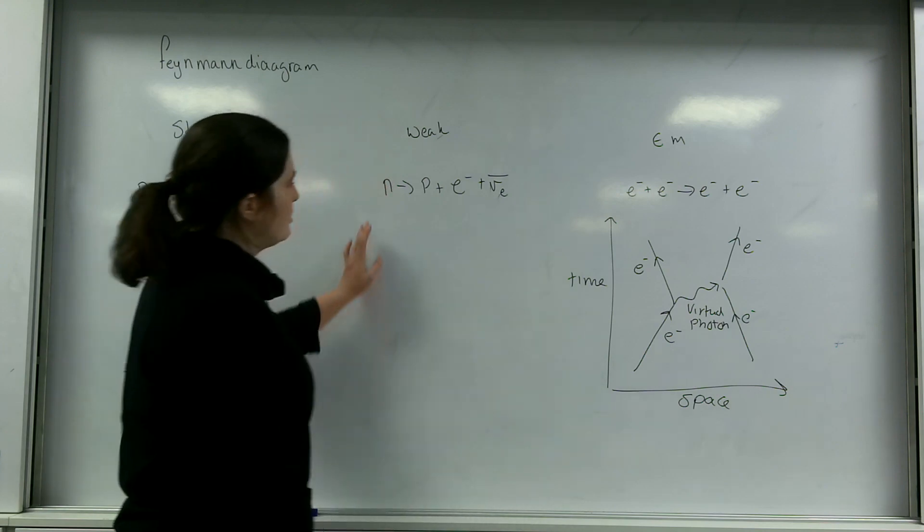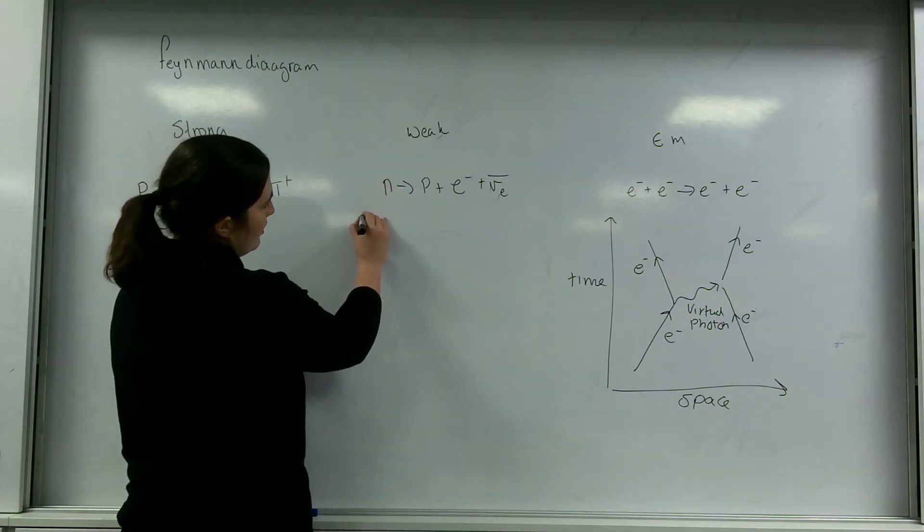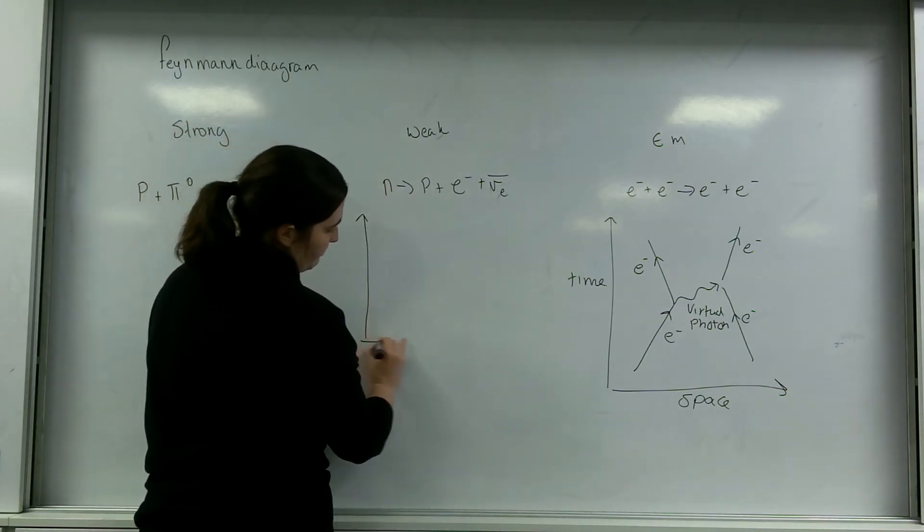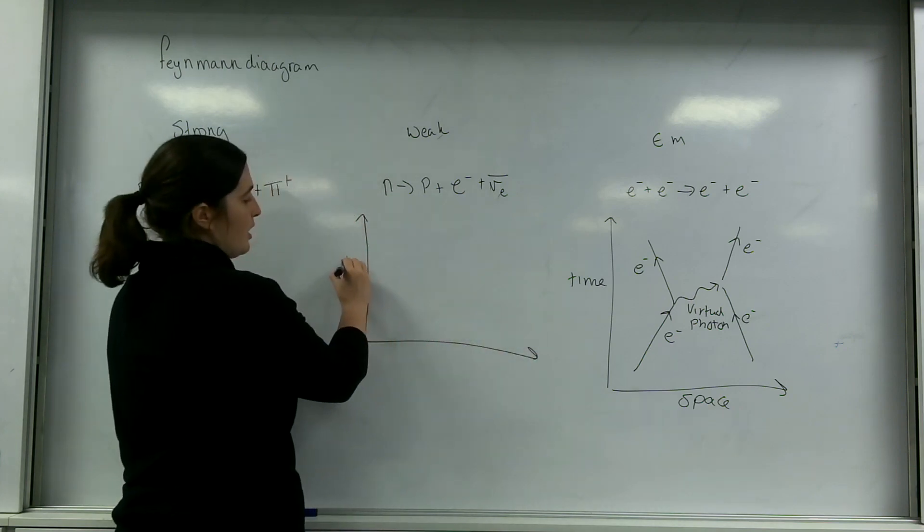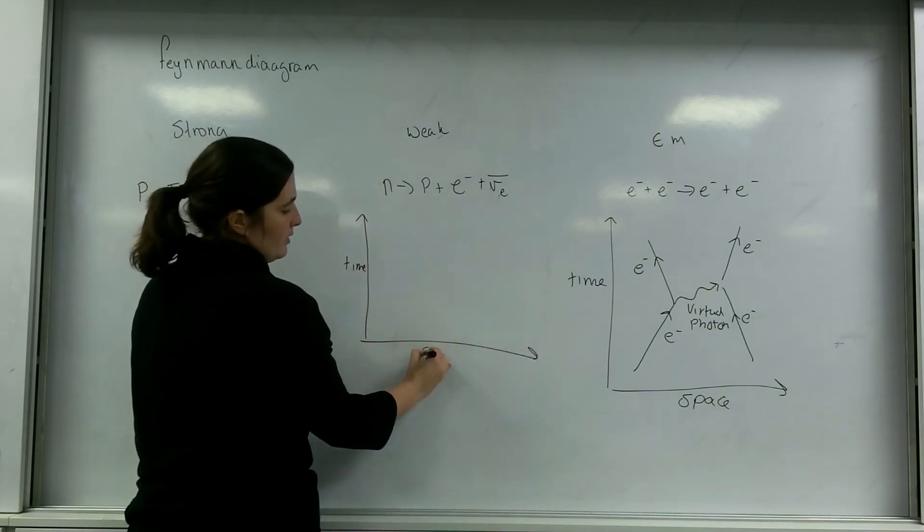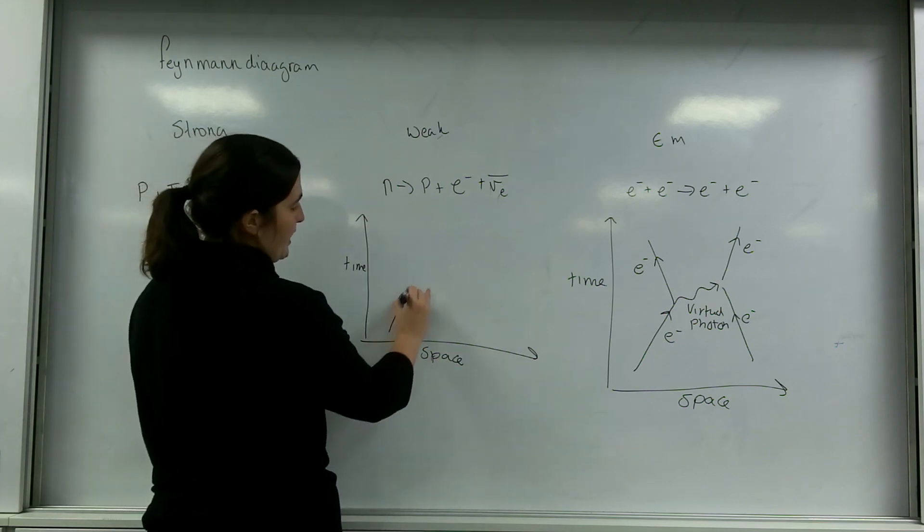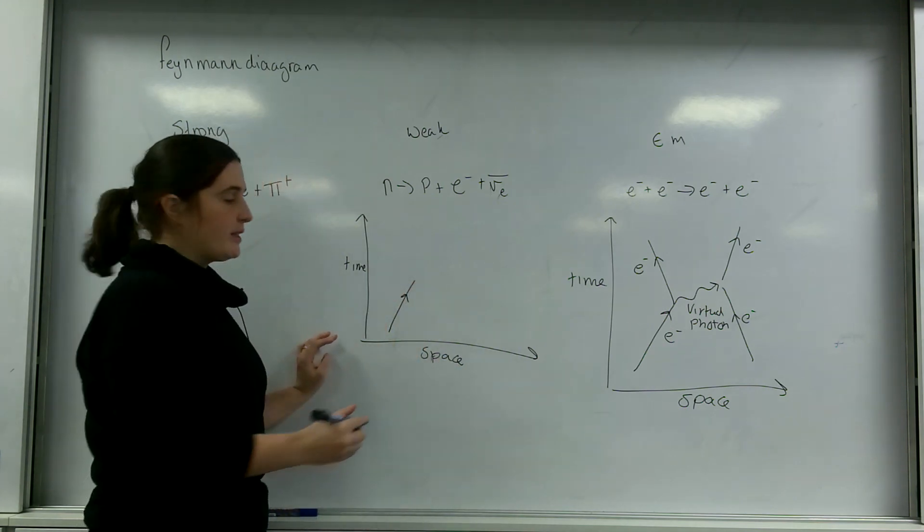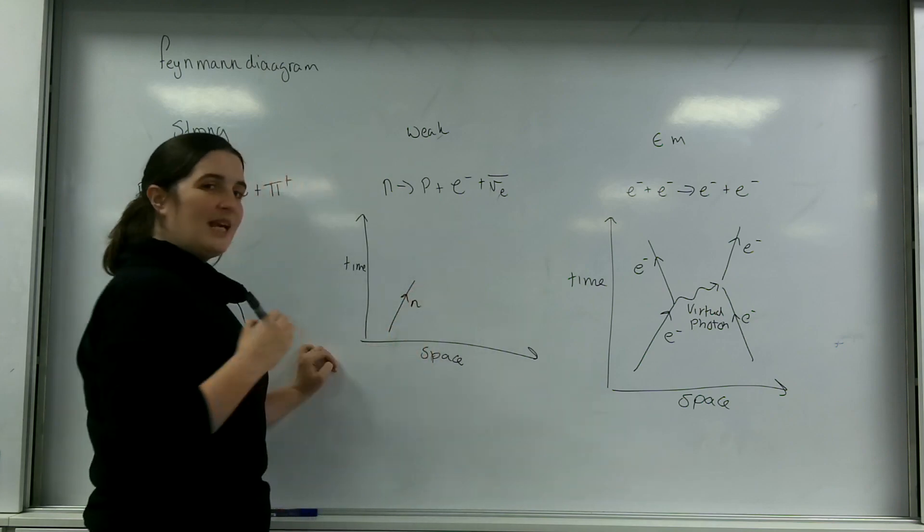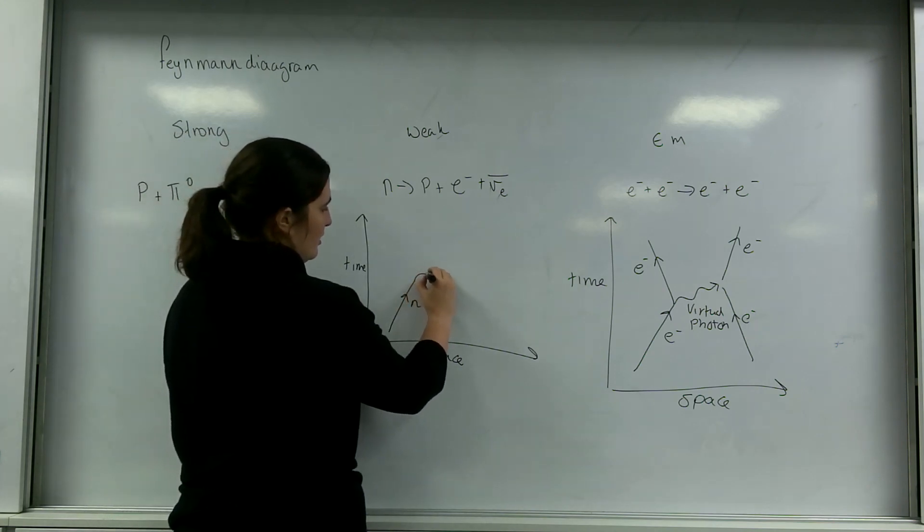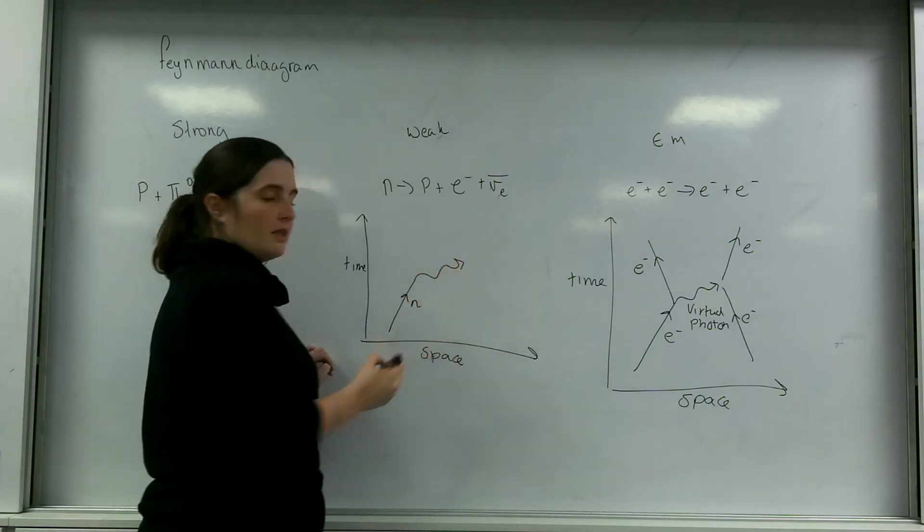Let's look at this one. This is a weak interaction, neutron decay. Again, same thing: time and space. A neutron comes in and it is the only thing that comes in, and it is the thing that decays.